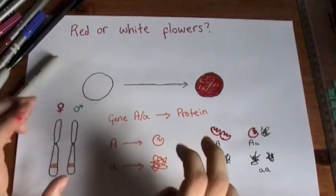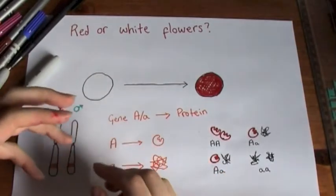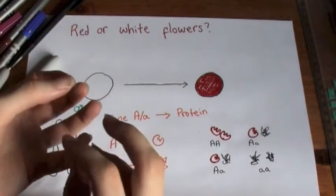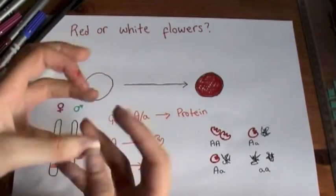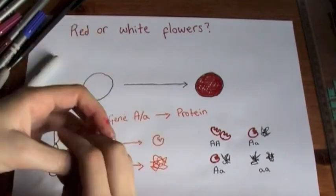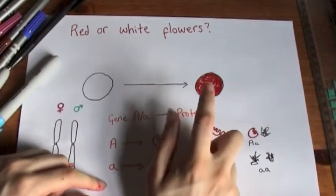And when you have the dominant version, it codes for a protein in which the sequence is correct, and folds exactly how it's supposed to. It has an active site perfect for this, and it can catalyze the reaction that forms this red pigment.